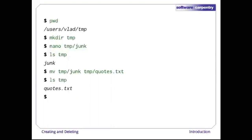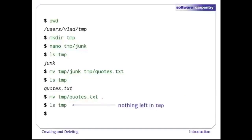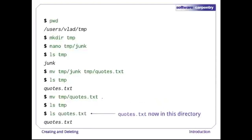Sure enough, ls shows us that temp now contains one file called quotes.txt. Let's bring that file into the current working directory. Again, we use mv, but this time the second argument is a directory. The effect is to move the file from the directory it was in to a different directory. Sure enough, ls shows us that temp is now empty, but we now have quotes.txt in our current directory.